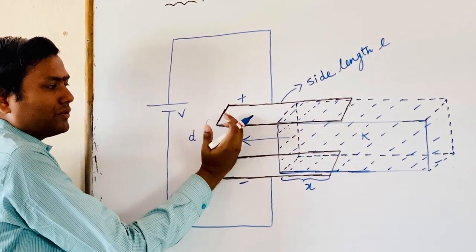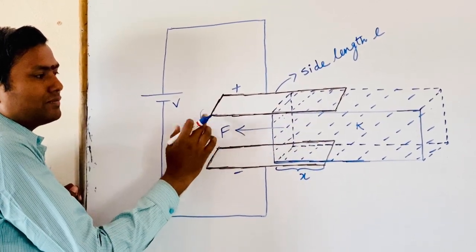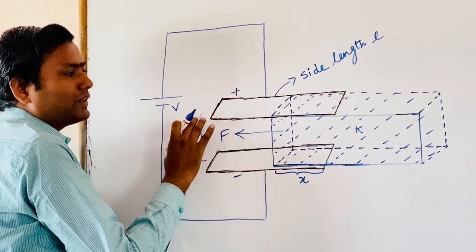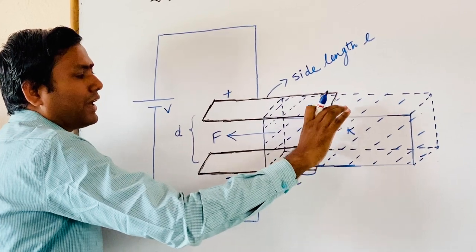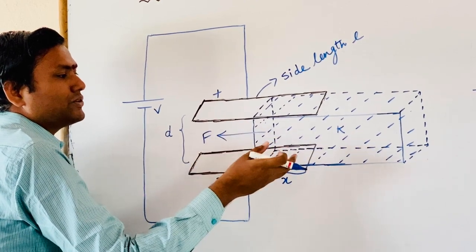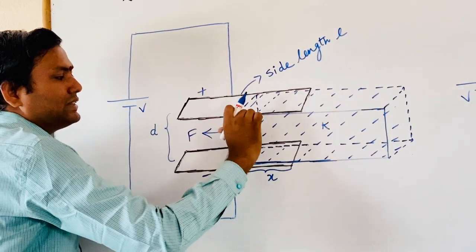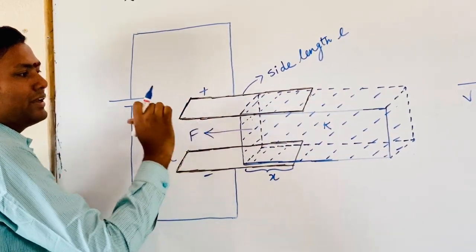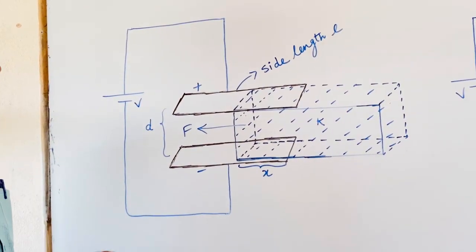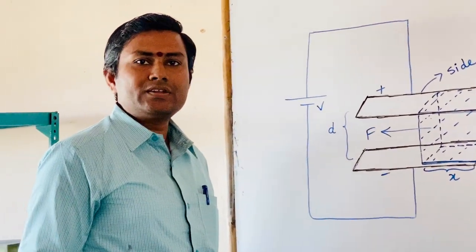Whenever the slab moves out in that direction, these free charges start to exert force on the dielectric slab in the rightward direction. Again the slab starts to move in the rightward direction. Whenever it fits in between the plates again, this force is zero. Whenever it goes to the right side again, this force starts to act in the leftward direction. This process will continue in this manner. That is why this force is clearly responsible for oscillatory motion.